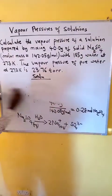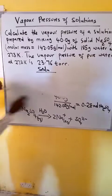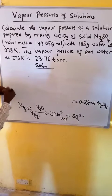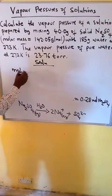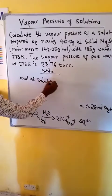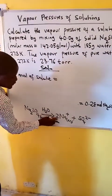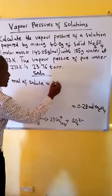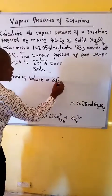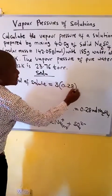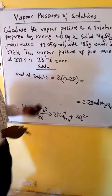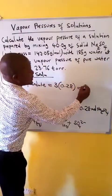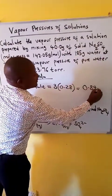That will be the total moles of solutes in this solution. The moles of solute in the solution equals two moles plus one mole, which is three. So we multiply three times 0.28 moles, and we get 0.84 moles as the total number of moles of solute in this solution.